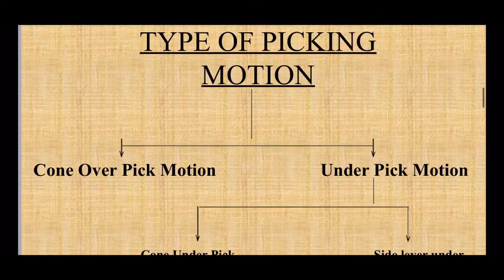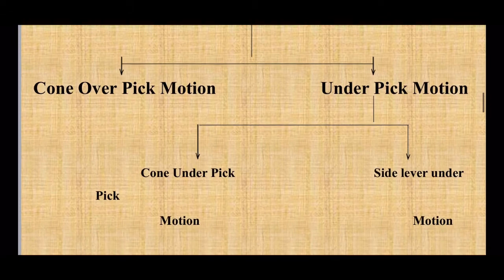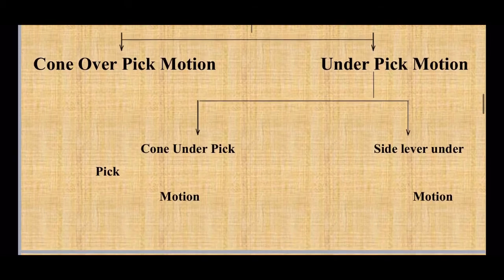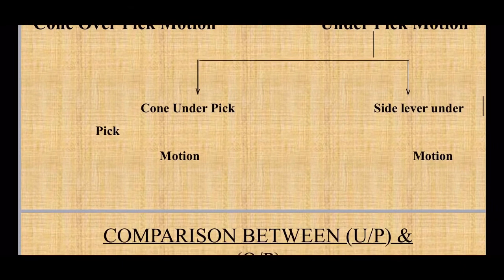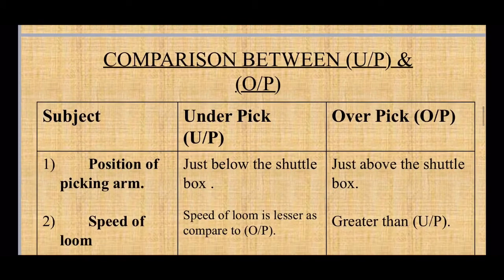Now, types of picking motion. We can categorize picking motion mainly into two categories: overpick motion, which uses a cone and is also known as cone overpick motion, and underpick motion. Underpick motions are of two types: cone underpick motion and side lever underpick motion.